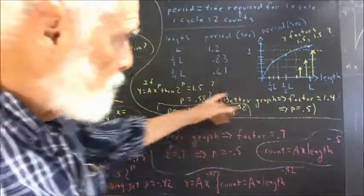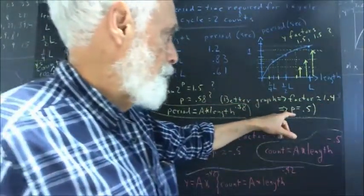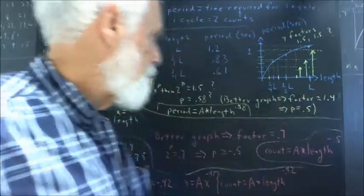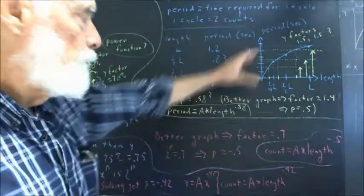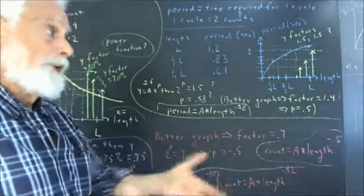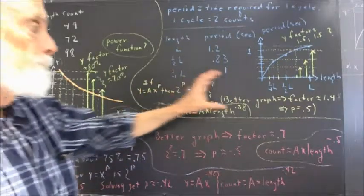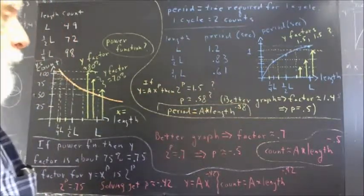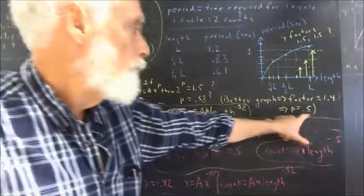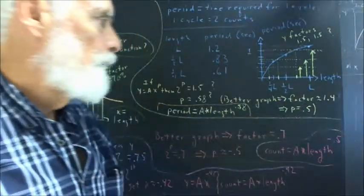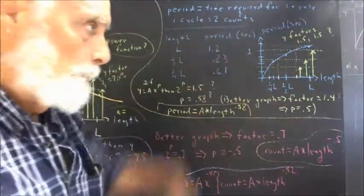Now, a better graph would give us a factor of 1.4, and then p would be close to about 0.5. But, again, you could easily redo this, use your own counts, take your own data from the video, the original video, and see what your model is. But this would be a model for period, A times length to the 0.58, or to the 0.5 if we use a little better graph and subdivide it a little more carefully. Thank you.